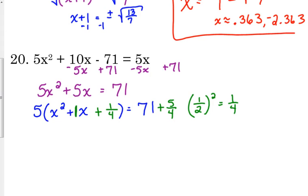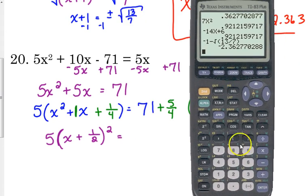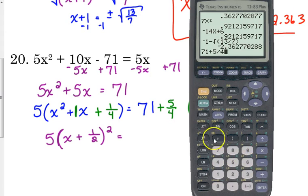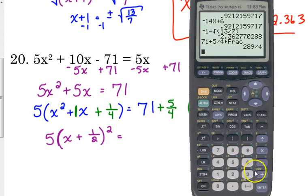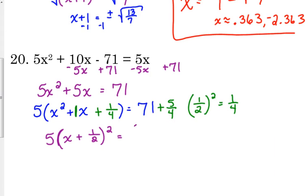Moving right along, let's factor. That would be x plus 1 half squared, because 1 half was the number that we squared. And let's add 71 and 5 fourths and get that in fractional form. 289 over 4.